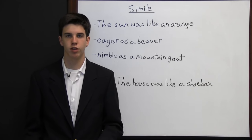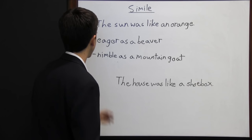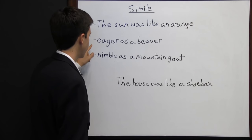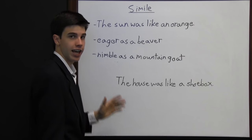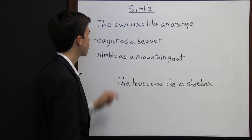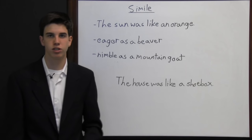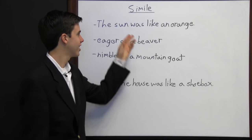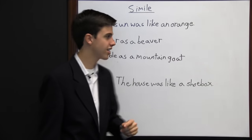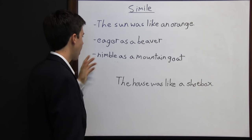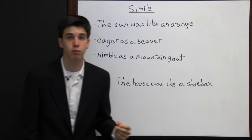A simile is a figurative expression in which the author compares one thing to another using the word "like" or "as." Examples: "the sun was like an orange," "eager as a beaver," "nimble as a mountain goat." In the first, the author compares the sun to an orange. This gives the reader a different perspective — no longer thinking of the sun in the sky, the reader is imagining an orange in the sky. That's the point of a simile.